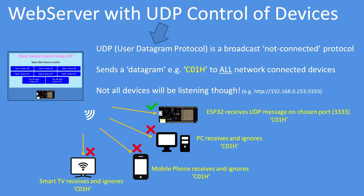It's using the user datagram protocol, which is a broadcast protocol — it's not connected to any specific device. It sends what's called a datagram; in my example, 'client 01 hi' goes to all network-connected devices. Not all devices will be listening, so the device needs to listen on port 3333, the one chosen in the source code.